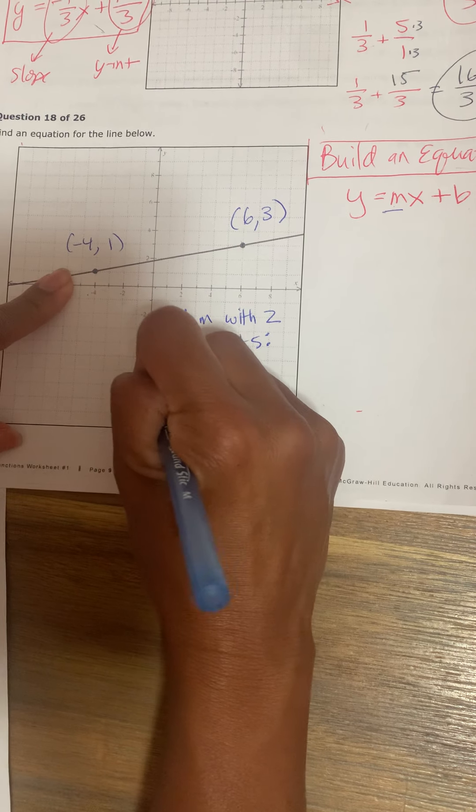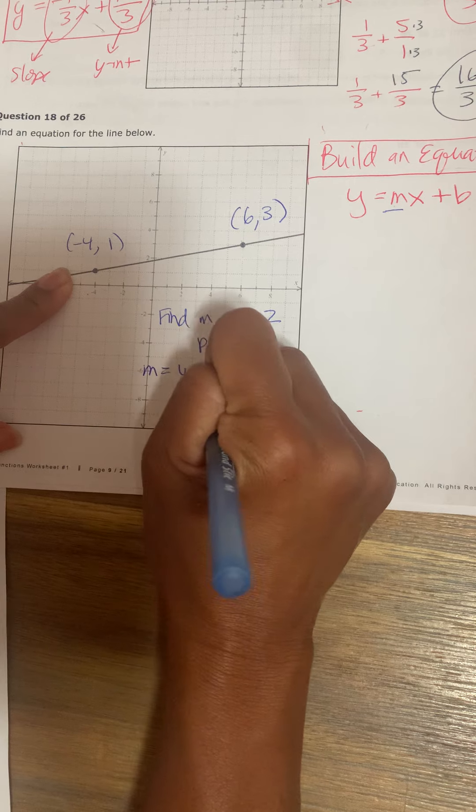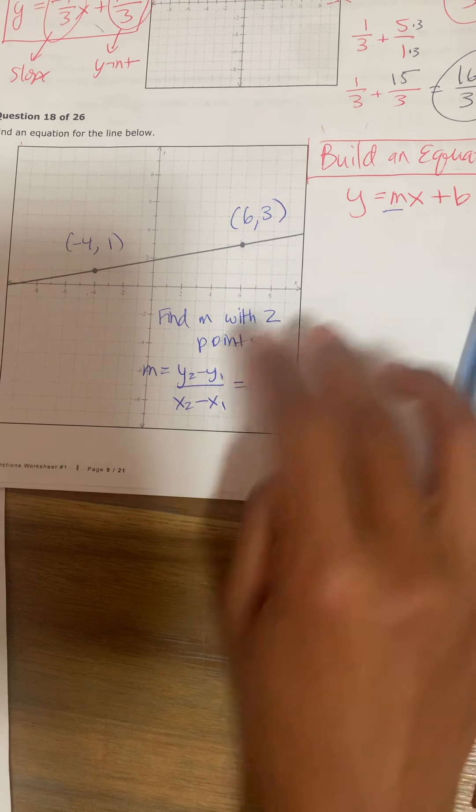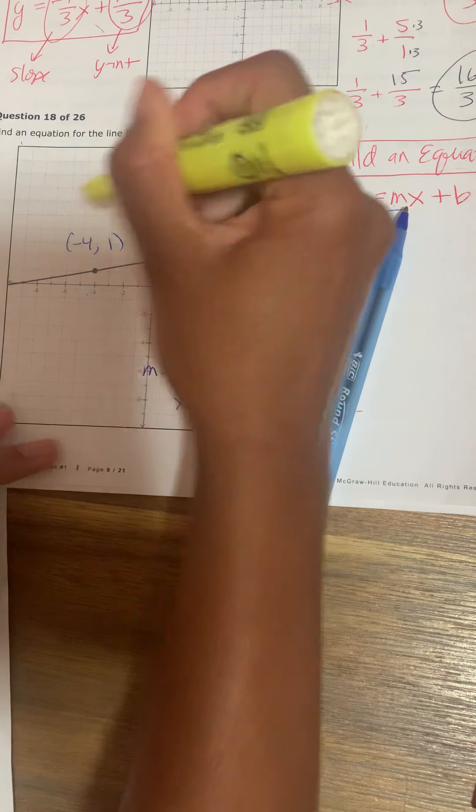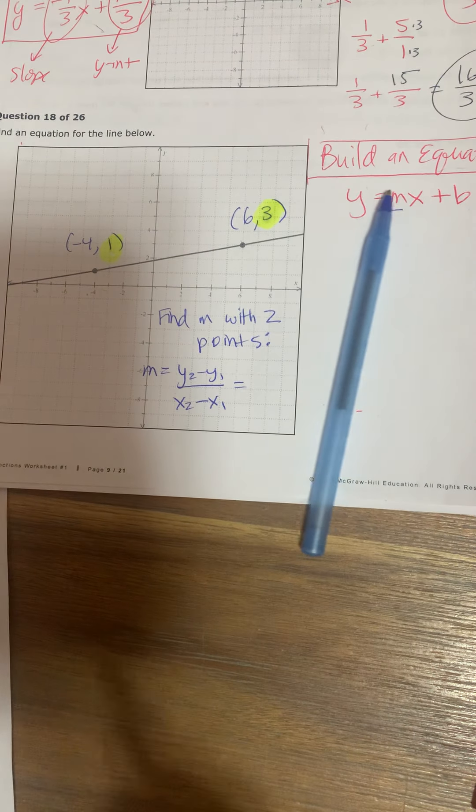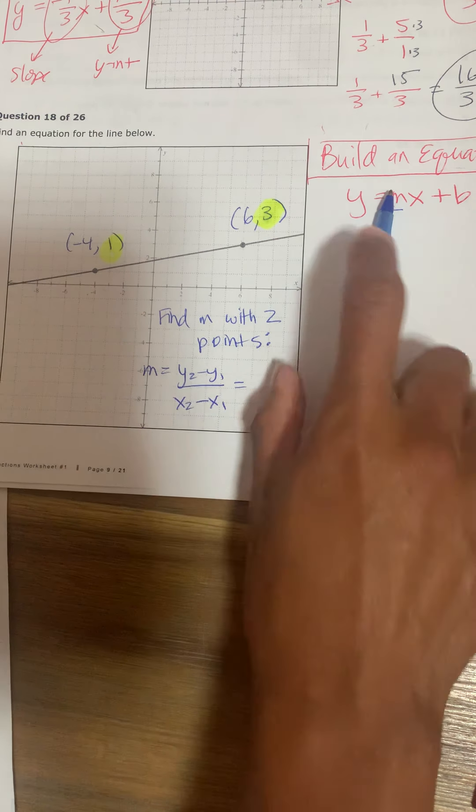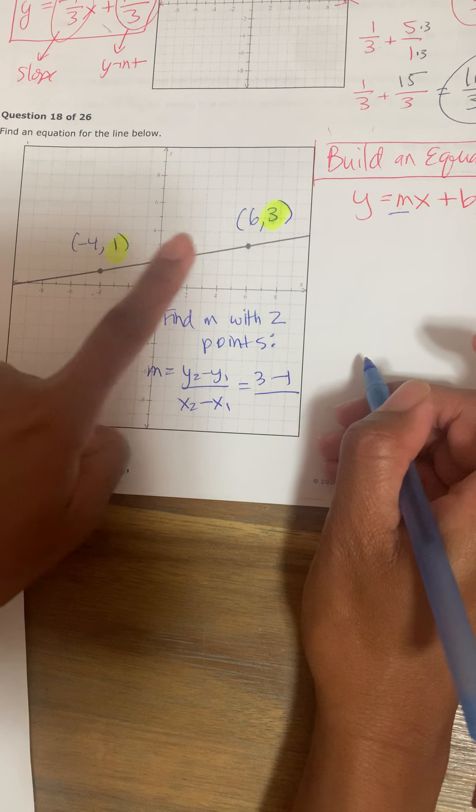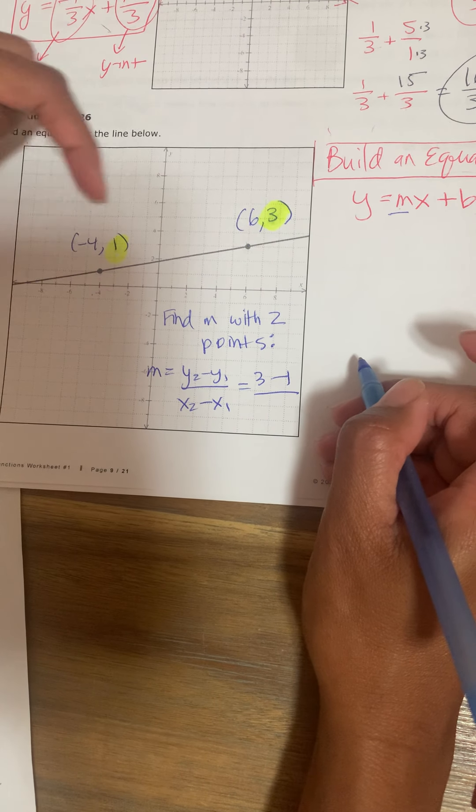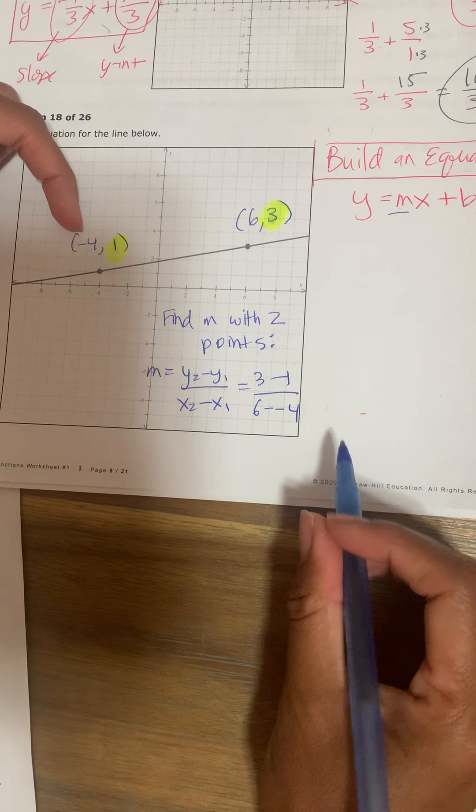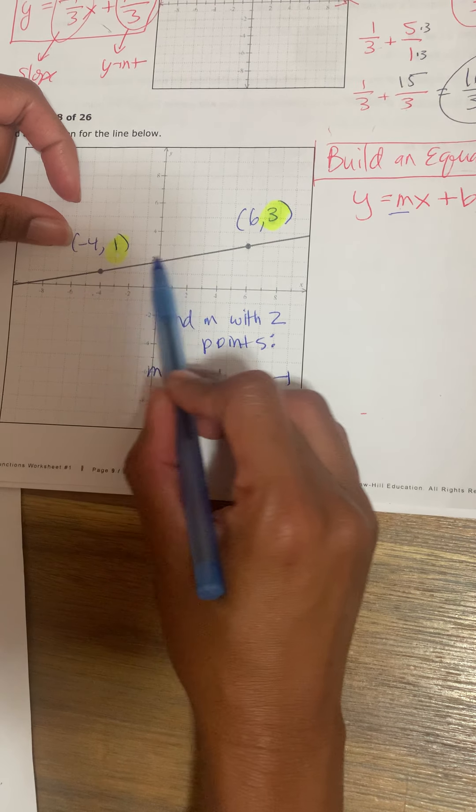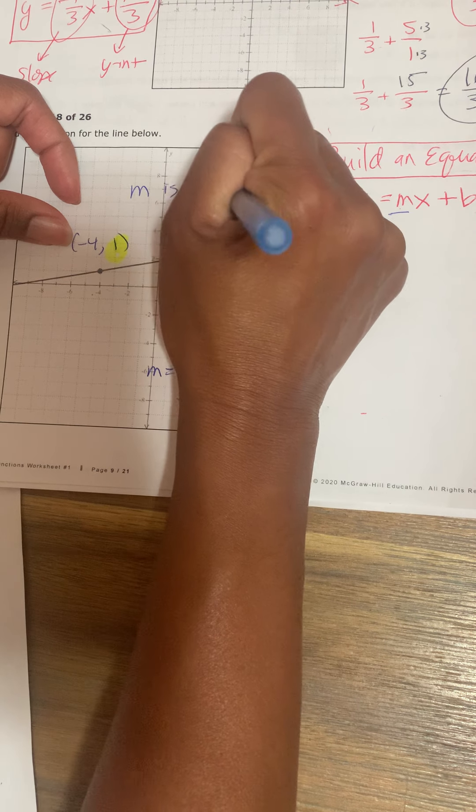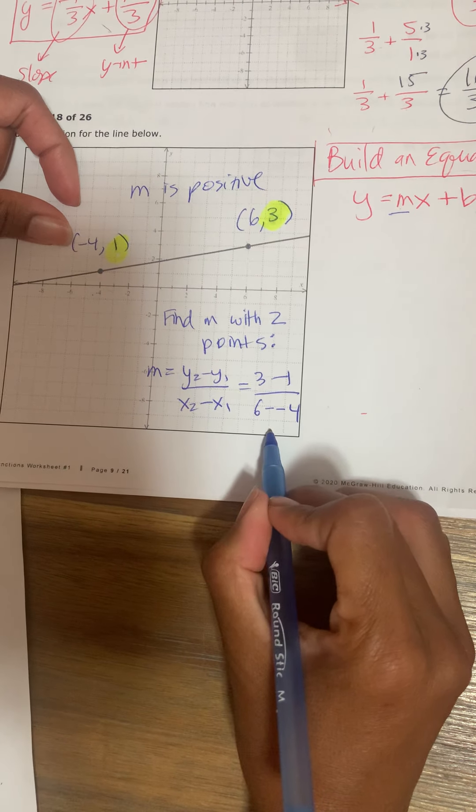So the slope here is y2 minus y1 over x2 minus x1. So difference between the y values. The y values are the second part of the point. So I'm going to do 3 minus 1. Then I need to do the same order on the bottom, I'm going to do 6 minus negative 4. And I should expect that my slope is going to be positive since we're going uphill.